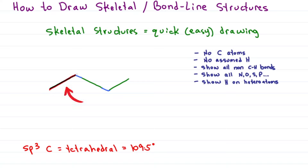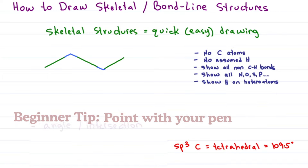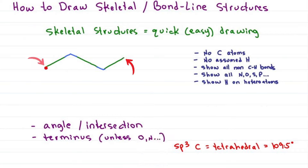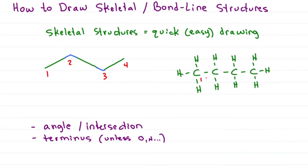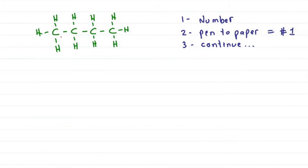Every line represents a bond between carbon atoms. A tip when starting out: point with your pen so you can easily identify the carbon atoms. Every angle or intersection is a carbon atom, and every terminus or end is also carbon unless there's a heteroatom, which we'll cover soon. Looking at butane, that's one, two, three, four carbons. Number your carbon chain, then pen to paper is one — continue until you reach your target.